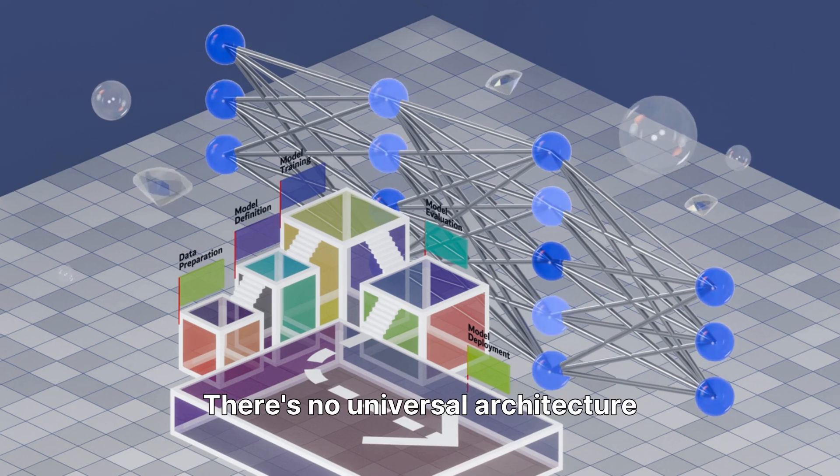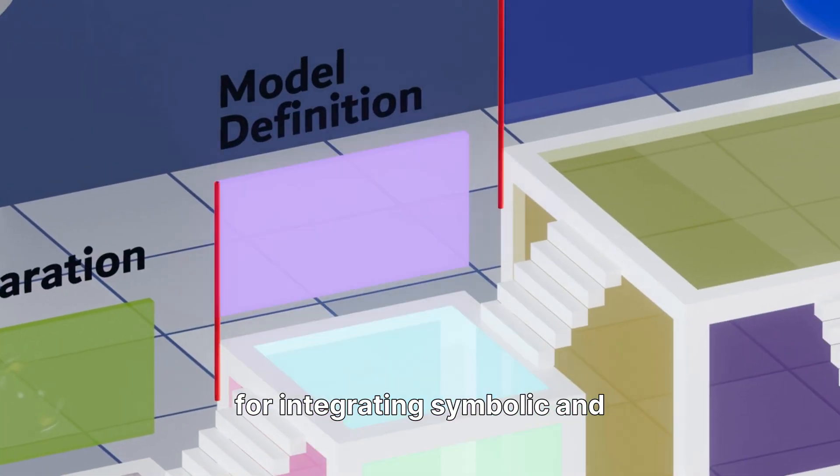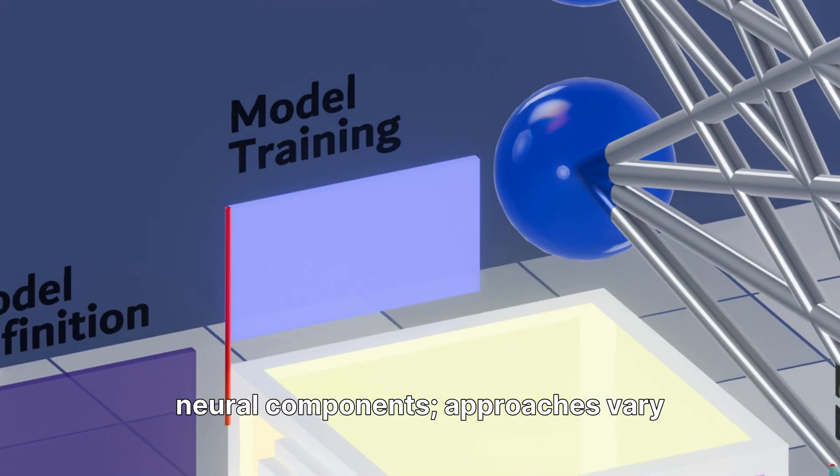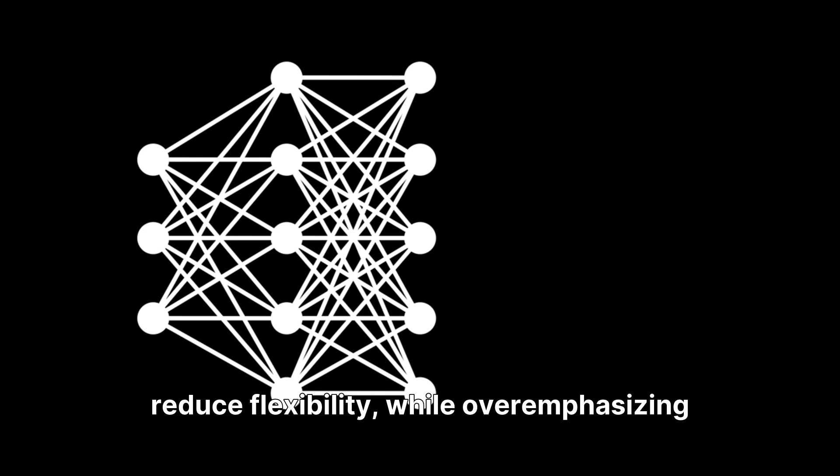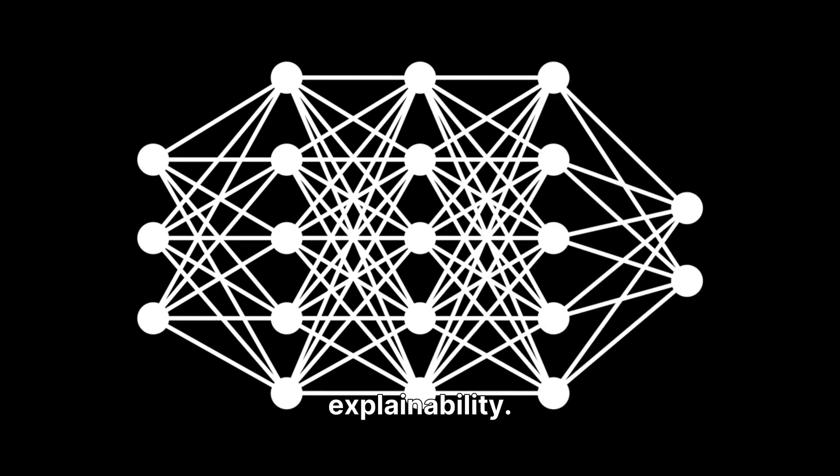There's no universal architecture for integrating symbolic and neural components. Approaches vary widely. Over-emphasizing symbolic logic may reduce flexibility, while over-emphasizing neural learning may diminish explainability.